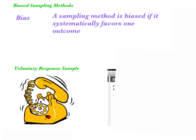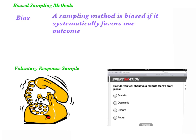Another example of voluntary response is an online poll. Here's a question that says: how do you feel about your favorite team's draft picks? In this case, people have the option of whether they respond to the poll or not. These two sampling methods are biased because they would favor one outcome over the other. Generally, in these cases, people with stronger opinions are going to tend to answer these questions. Even though these methods are biased, you'd be surprised how many companies and organizations do use these to gauge public opinion.